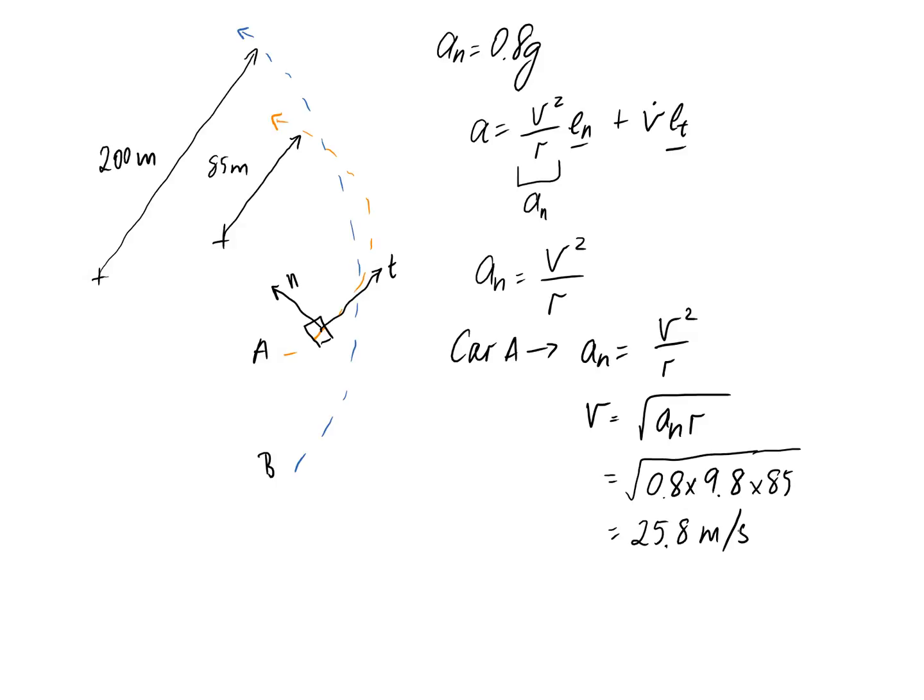The second part is to do this for car B. We're going to end up with the same expression for velocity here. Again, we can substitute into this equation. It's limited to the same acceleration, so 0.8 g's. But, this time it's on a bigger circle, a 200 metre circle. So, it should be able to go faster. From this, you can calculate this car needs to go 39.6 metres per second at its fastest, in order to keep the acceleration under our limit.